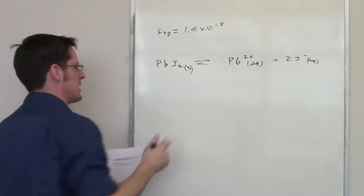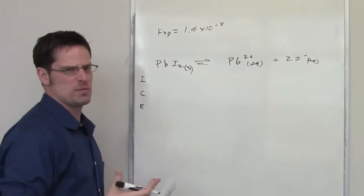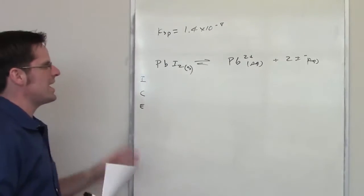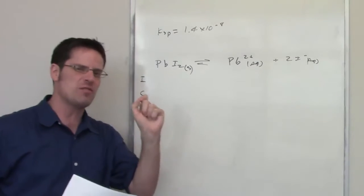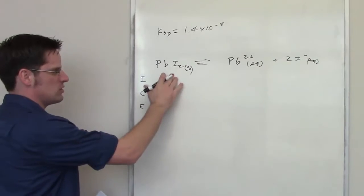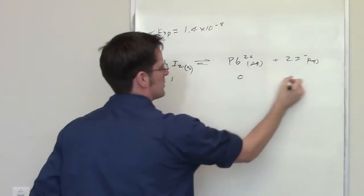To do this I'm going to have to set up an ICE table. This follows from analogous examples I've already given in separate videos. So what I do right at the beginning is I assume that when I throw lead iodide into water, it's 100% solid, and these amounts are zero.